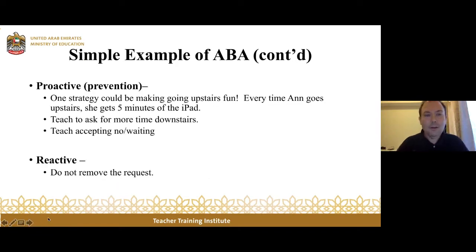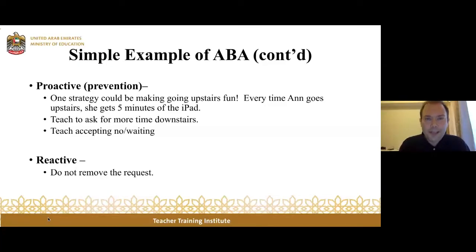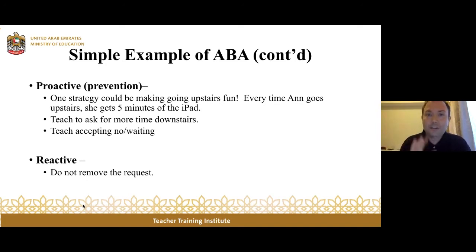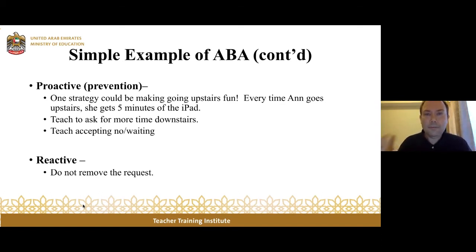What could we do in Anna's case? One thing we could do is make going upstairs fun — put some fun things upstairs so the transition goes smoothly. We could also teach Anna to ask for more time instead of flopping on the floor — simply say 'can I have more time downstairs?' We could also focus on teaching Anna to accept no, or teaching Anna to wait. On the reactive side, we simply don't remove the request. If Anna flops on the stairs, we don't let that behavior yield an escape. We keep the demand on: you need to go upstairs.